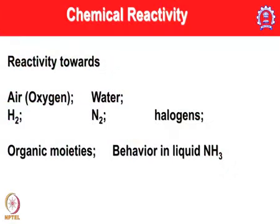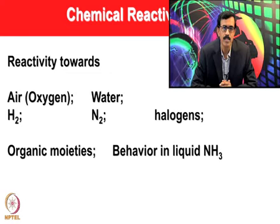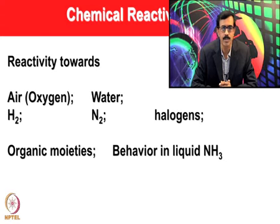When we talk about the chemical reactivity of alkali metals, we can consider several aspects: how they react with air (oxygen), how they interact with water, what happens when they are treated with hydrogen, nitrogen, or halogens, and finally their interaction with organic moieties and their behavior in liquid ammonia.